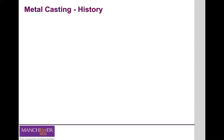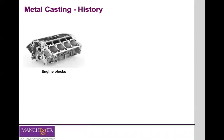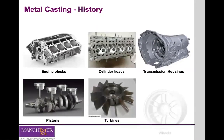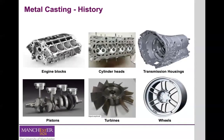Casting wasn't just important for old artifacts. It's still currently used in our industries today — to manufacture engine blocks, cylinder heads, transmission housings, pistons, turbines, and wheels. It can be used to manufacture a wide range of products, some with less demanding requirements in terms of precision and accuracy, but also parts requiring much higher precision. This is possible due to the vast range of metal casting processes available, which we'll discuss over the next five lectures.